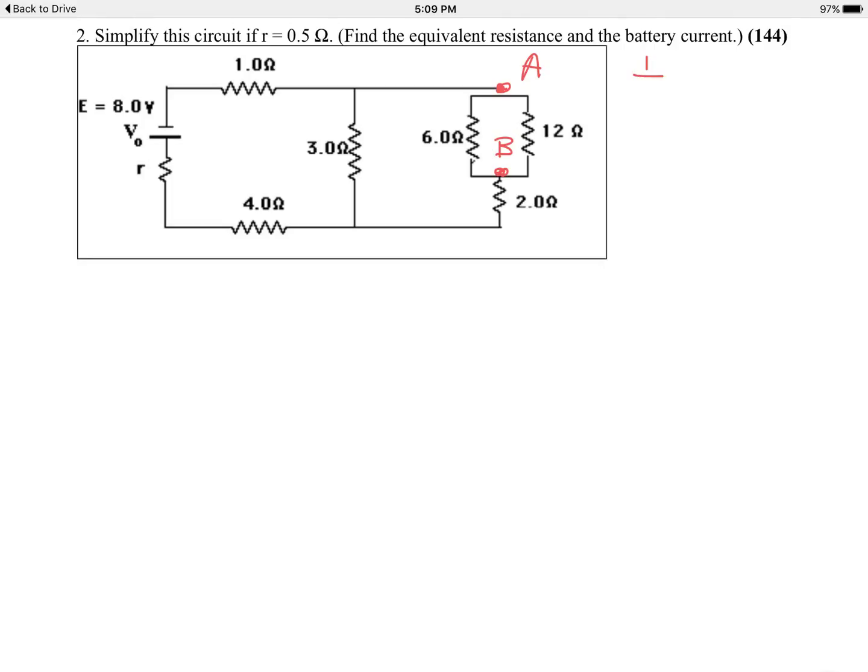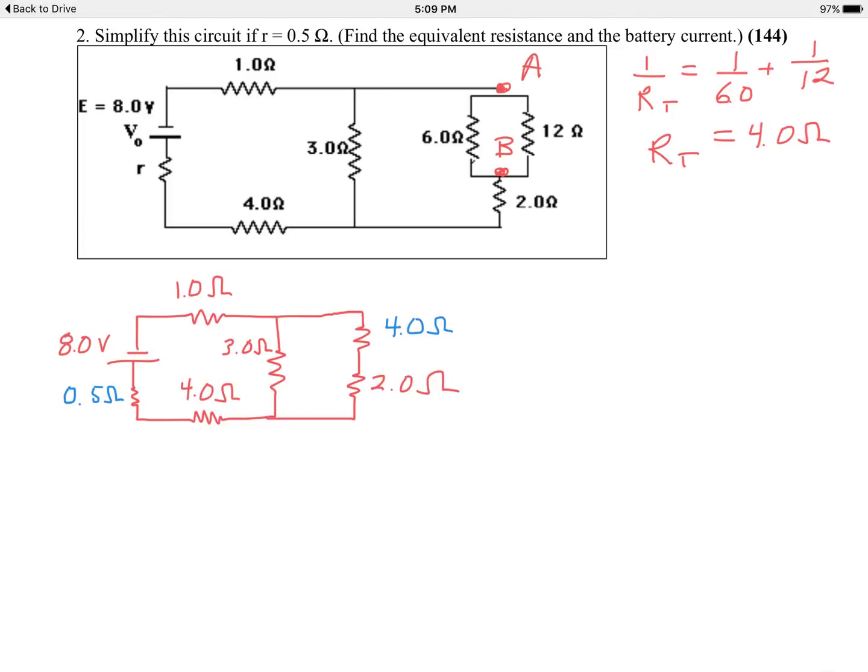So I'll do the computation over here. We have 1 over our total will be equal to 1 over the 6.0 plus 1 over the 12. Go to your calculator. The combined resistance of those two resistors is 4.0 ohms. So now we'll redraw the diagram. So here's the new diagram. I've replaced the 6 and the 12 ohm resistors with its equivalent resistance of 4.0 ohms. I've also labeled on the far left over there the given 0.5 ohm resistor that was stated in the problem above.